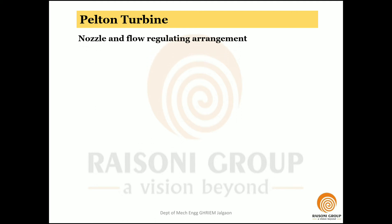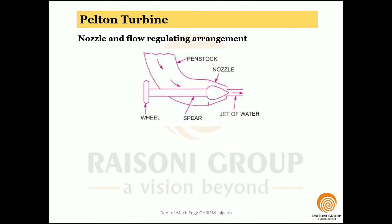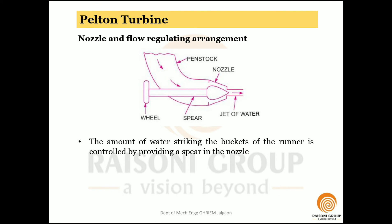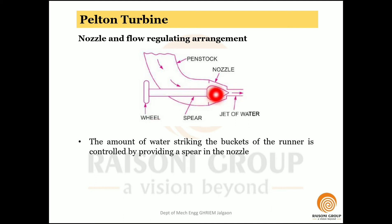The first part is the nozzle and the flow regulating arrangement. The amount of water striking the buckets of the runner is controlled by a spear arrangement. As shown in the figure, there is a spear whose position is controlled by rotating a wheel — by using this wheel we can move the spear forward or backward. The spear is located at the nozzle exit, so by moving it we can control the cross-sectional area at the exit of the nozzle and consequently control the flow of water.